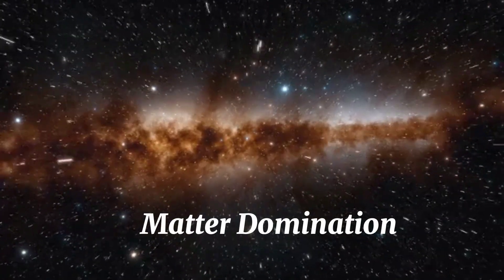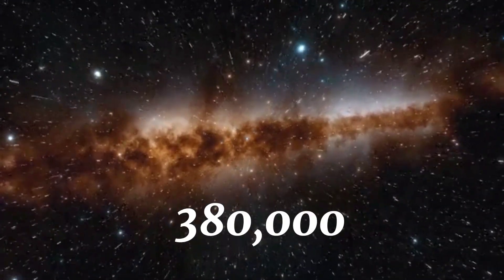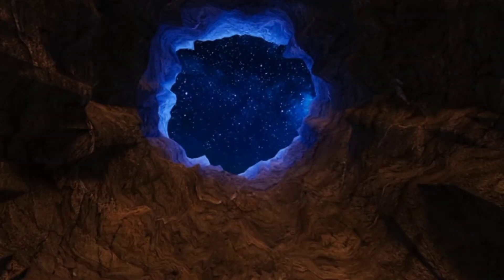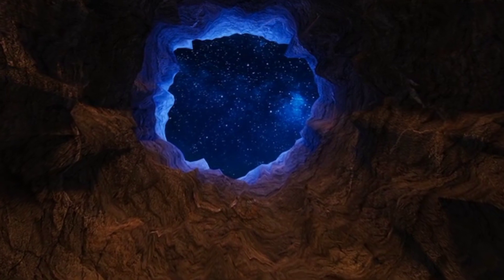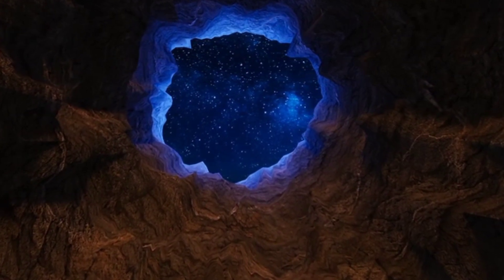Starting around 380,000 years and lasting for millions of years, matter begins to dominate over radiation. Dense regions of matter collapse under gravity, leading to the formation of galaxies, stars and other cosmic structures.